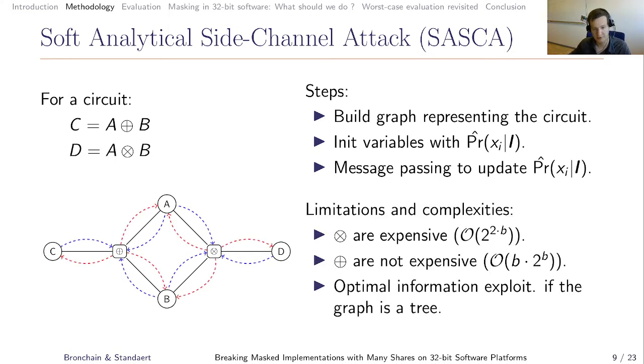What are the limitations and the complexities involved in running SASCA? First, multiplication, I mean the message passing rules for multiplication is expensive. Indeed, its complexity goes in 2 to the power 2B, where B is the number of bits in the target variables. So if you want to profile 8-bit values, so B equals 8, then the complexity of multiplication is 2 to the 16. And additions, it's less expensive because its complexity goes in B times 2B. SASCA is optimal way to recombine information if the graph is a tree, meaning that there is no cycles. If there is cycles in the graph, then this SASCA becomes heuristic.